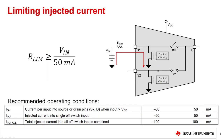It is important to follow the recommended operating conditions when designing a system with a device with injection current control. For example, this MUX tolerates up to plus or minus 50 milliamps of current injected into a disabled path. The total current injected into all off switches must be within plus or minus 100 milliamps. Limiting the injected current is as simple as adding a series limiting resistor to the disabled signal paths, calculated using Ohm's law: the resistance must be greater than or equal to the expected voltage at the input of the disabled channel divided by the maximum injected current rating.